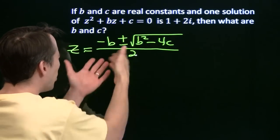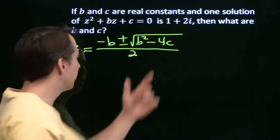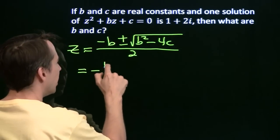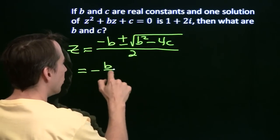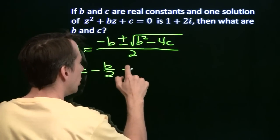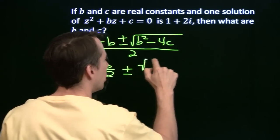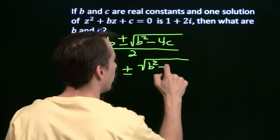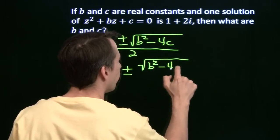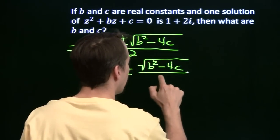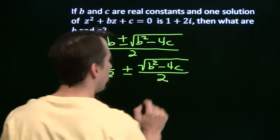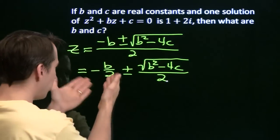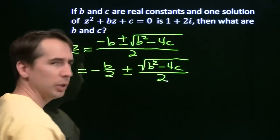I'm going to go ahead and break this up because the root we're given is broken up like this. So I'm going to write this as negative b over 2 plus or minus the square root of b squared minus 4c, all over 2. Now we know that b and c are real, so this has to come out to be real,